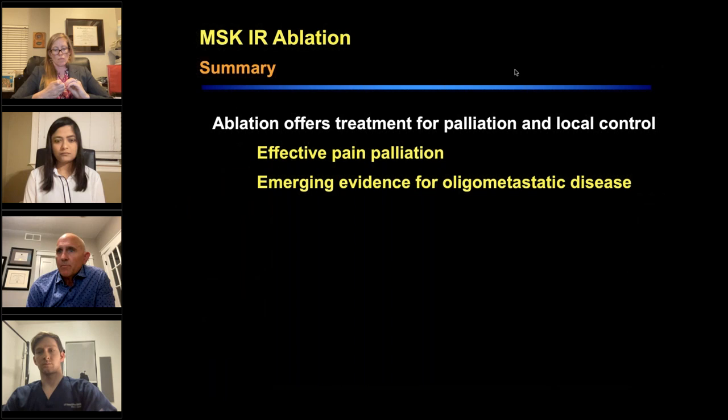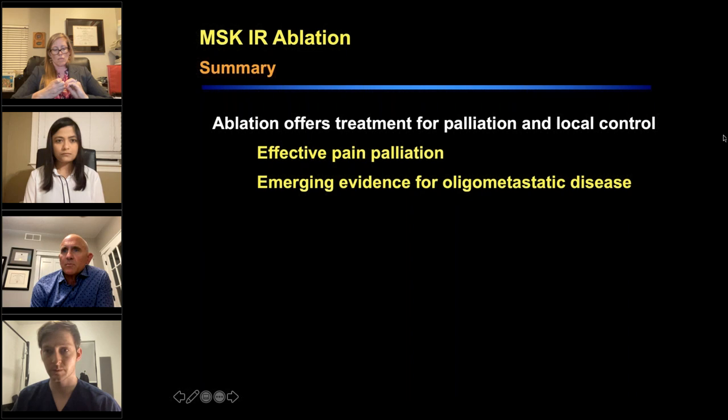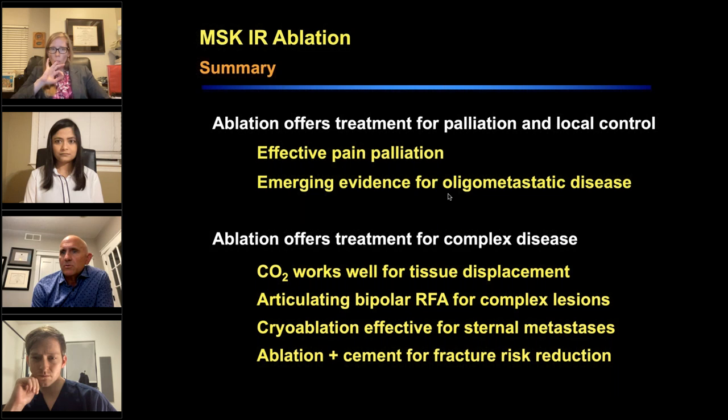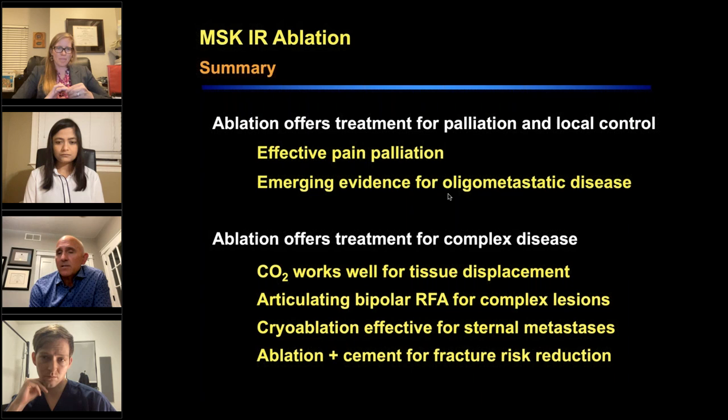In summary: ablation for palliation is really effective. There's also emerging evidence for treating oligometastatic disease in multiple different types of cancers. We can go after complex disease with CO2 separation, bipolar RFA for complex lesions, treating sternal metastases, and cement for fracture risk reduction in the pelvis.